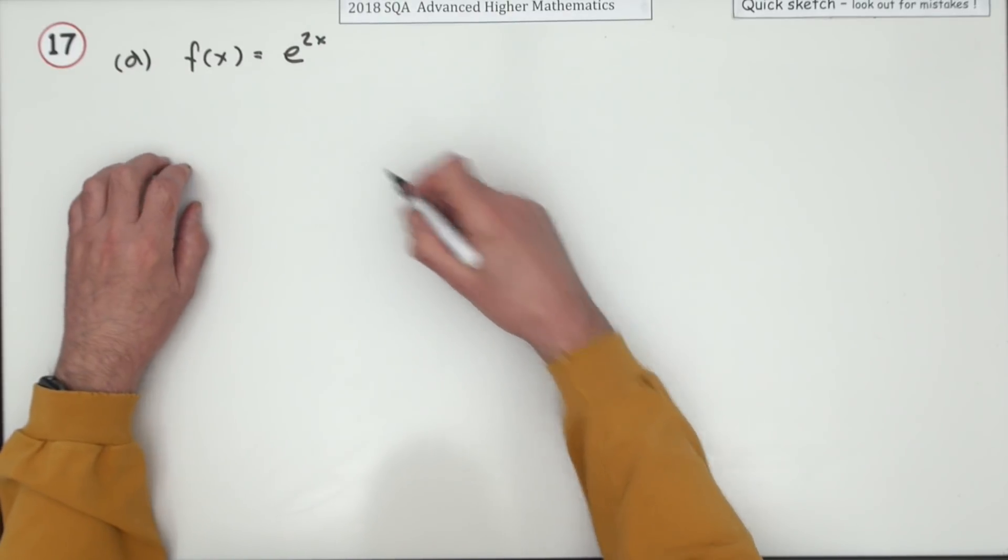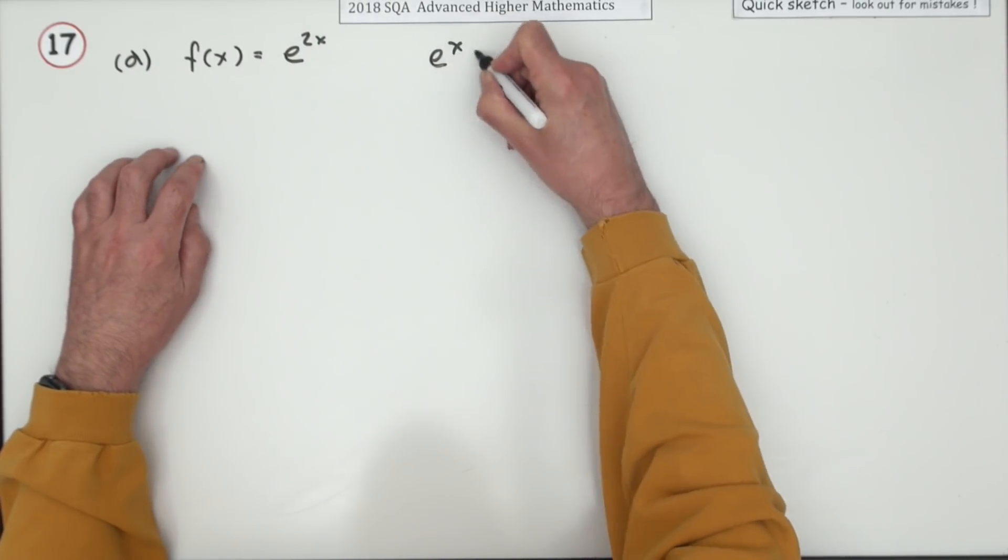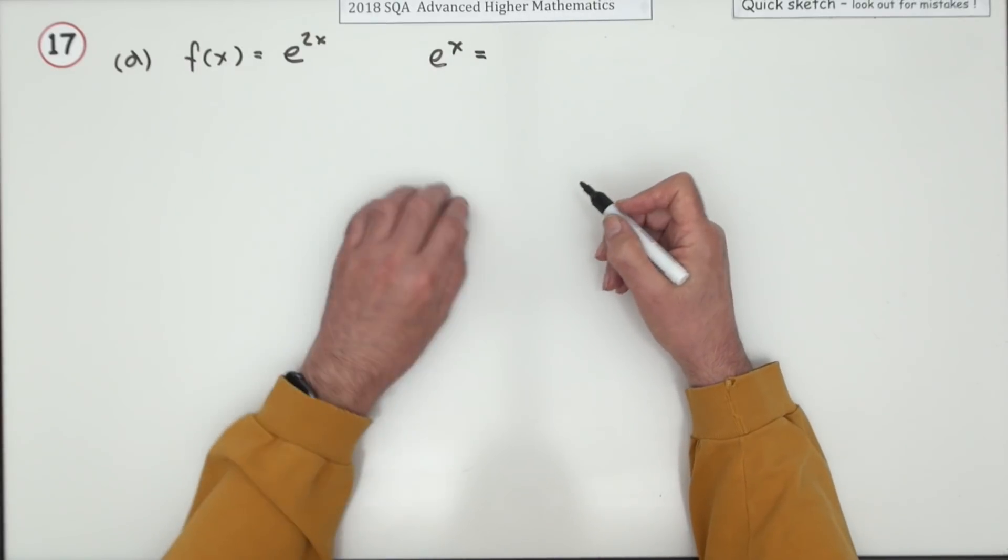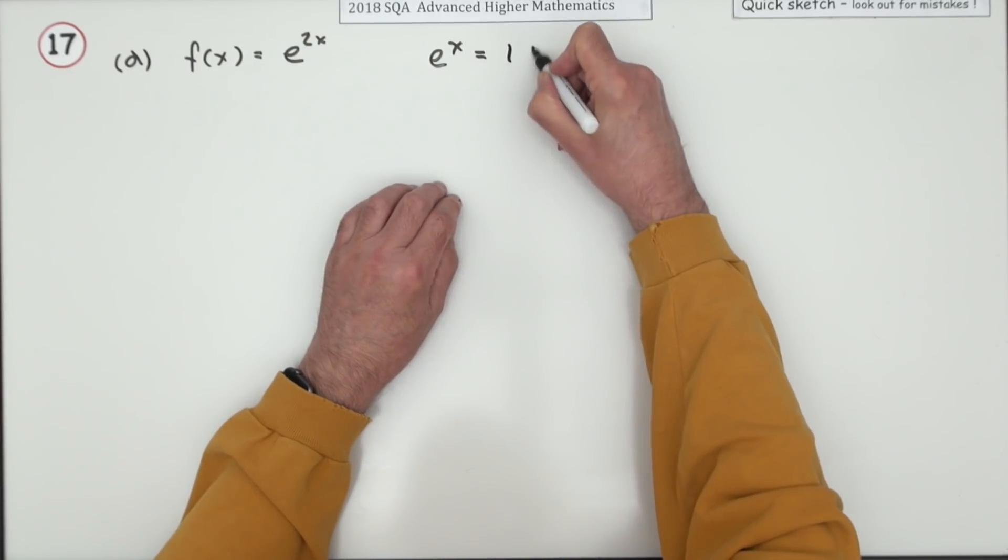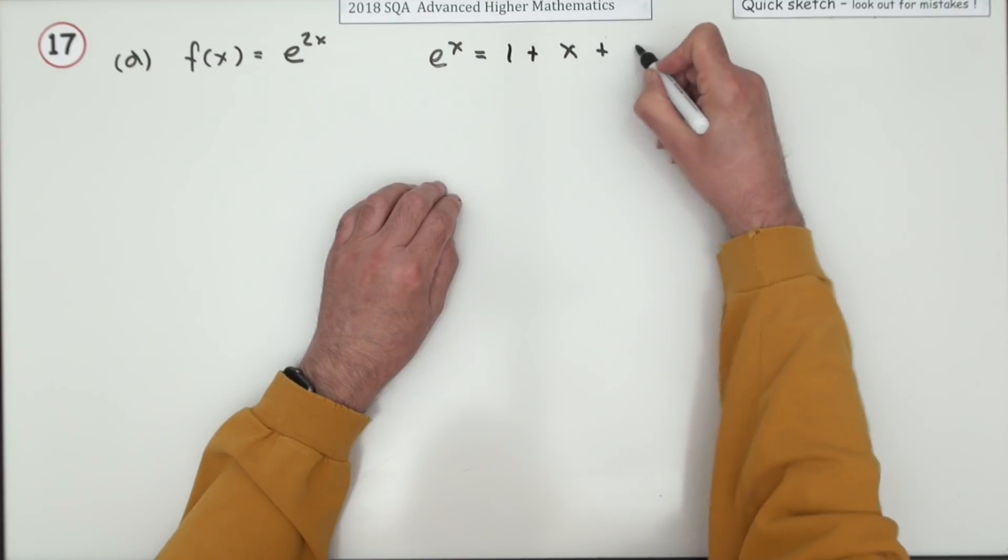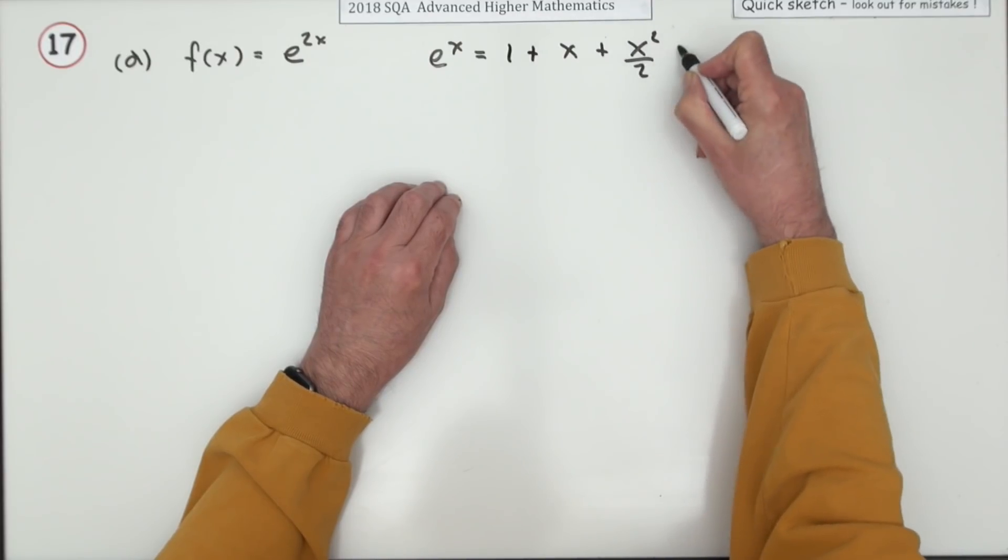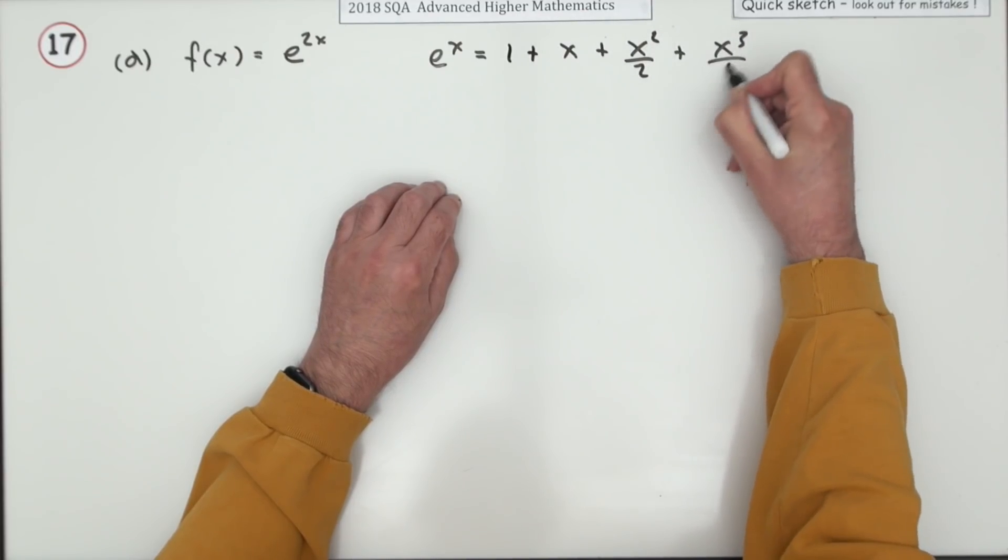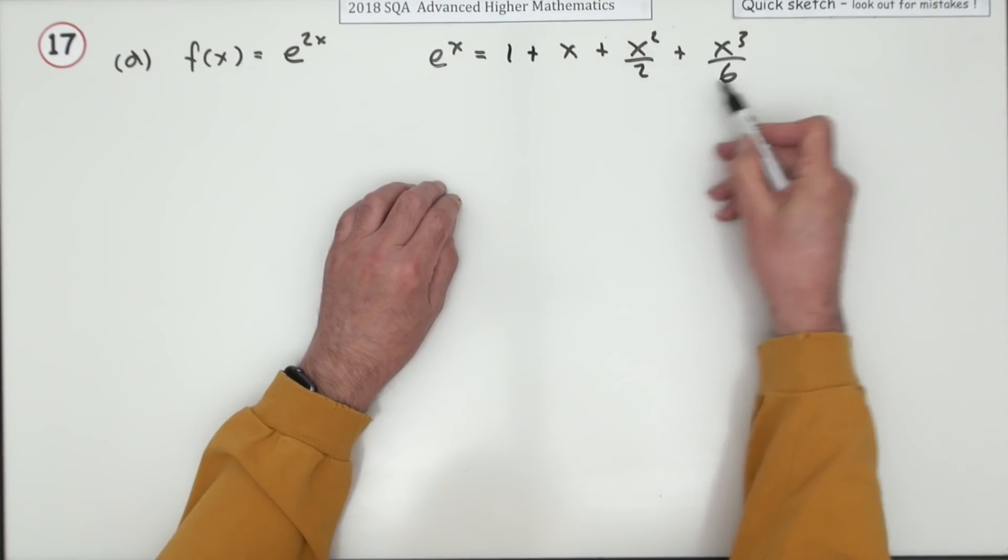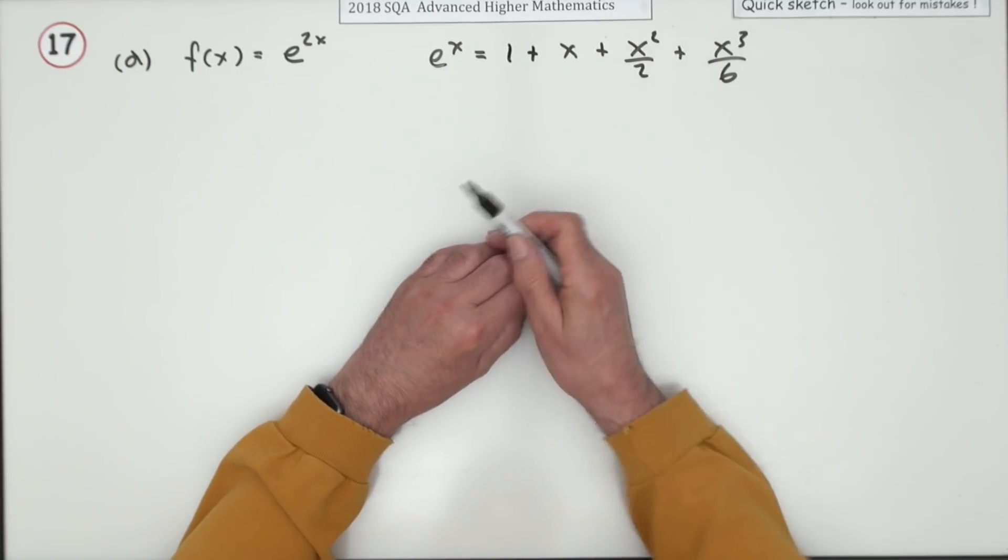But I think I'll not start that way. I think I'll start with the basic one, which is the very common one you know, e to the x. e to the x is 1 plus x plus x squared upon 2 plus x cubed upon 6 - 1 factorial, 2 factorial, 3 factorial as far as x cubed.